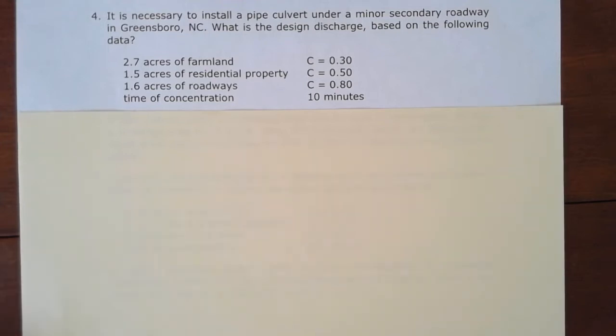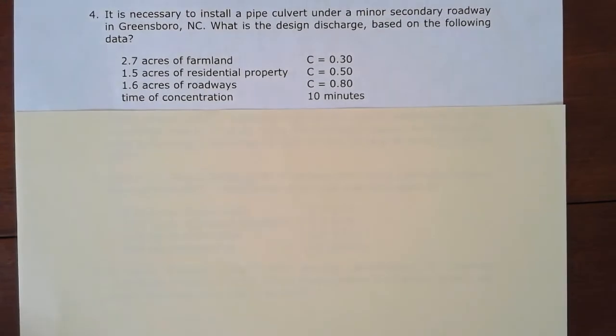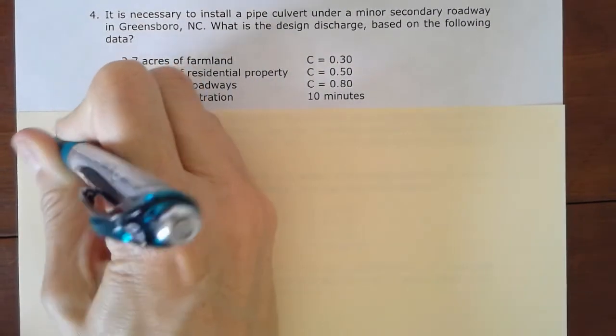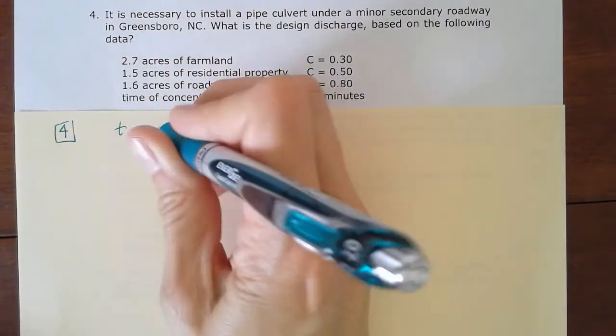All right, for hydraulics problem, homework problem four, we're going to install a pipe culvert under a minor secondary roadway in Greensboro, North Carolina. What's going to be the design discharge based on the following data? So we're given time of concentration. This is for problem four. We're told that that is equal to 10 minutes.